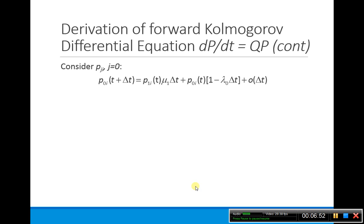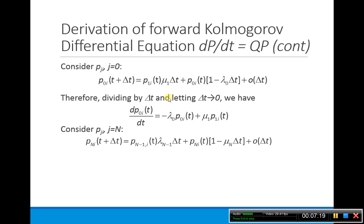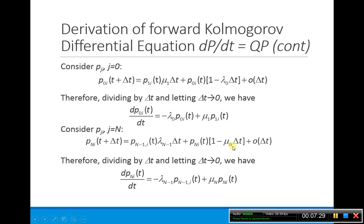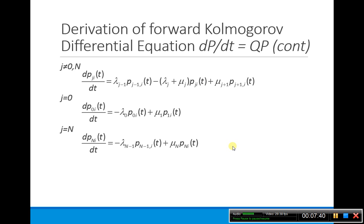For j equals zero, there's only one way to get to zero: if we had a death from state one, or if we stayed the same. Dividing by delta t and letting delta t go to zero gives us the differential equation for dp_{0i}/dt. For j equal to n, the only way to be in state n is if I came from state n minus one, or I stayed the same. Dividing by delta t and letting delta t go to zero gives us that differential equation. So we have three differential equations: one for interior j, one for j equals zero, and one for j equals n.